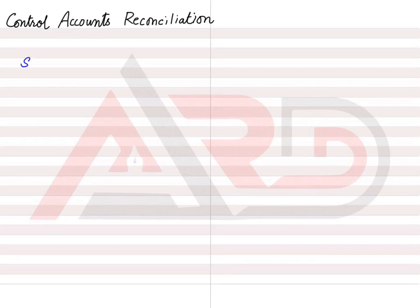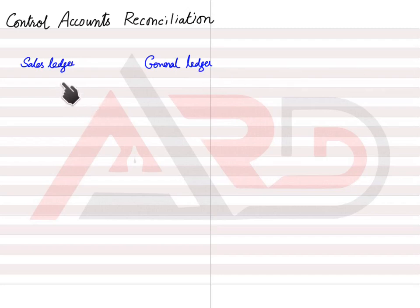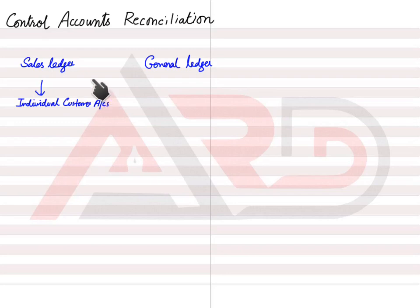There are basically three types of ledgers. One is the sales ledger, one is the purchase ledger, and one is the general ledger. In a sales ledger, there are separate accounts for customers — individual accounts for debtors. All individual customer accounts are in the sales ledger. All individual supplier, that is creditor, accounts are in the purchase ledger. And all other accounts — for sales, purchases, return inwards, return outwards, cash, bank, assets, liabilities, income, and expenses — come in the general ledger.